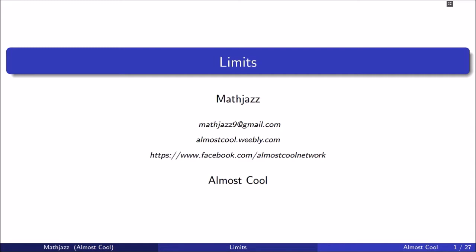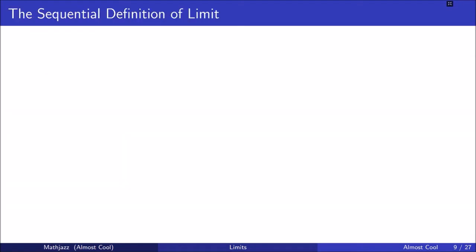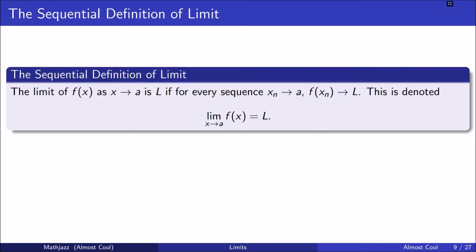Hello, this is Math Jazz from Almost Cool. This is the second video in our series on limits. Our topic today is the sequential definition of limit. The limit of f(x) as x goes to a is l if for every sequence xn converging to a, f(xn) goes to l. This is denoted as: the limit as x goes to a of f(x) equals l.